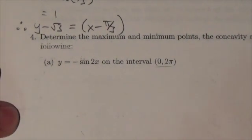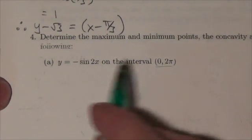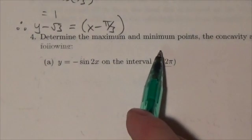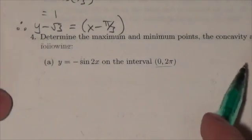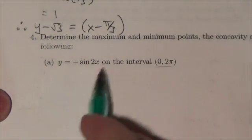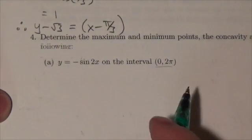All right, hi everybody. We're working through the trigonometry review. This is question four: determine the max and minimum points and the concavity and points of inflection for each of the following. We're going to start with y equals negative sine of 2x.